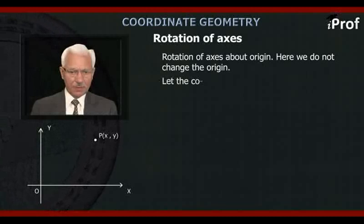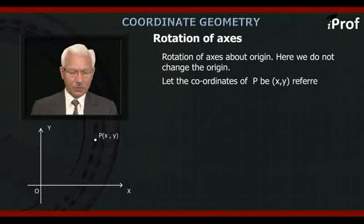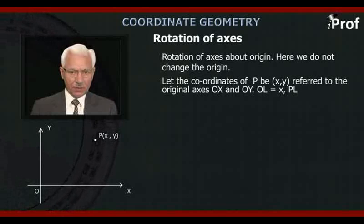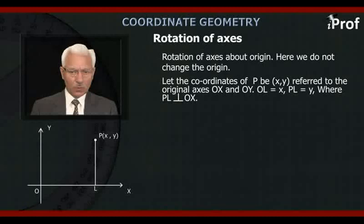Let the coordinates of P be (X,Y) referred to original axes OX and OY. Draw PL perpendicular to OX, OL equal to X, PL equal to Y.